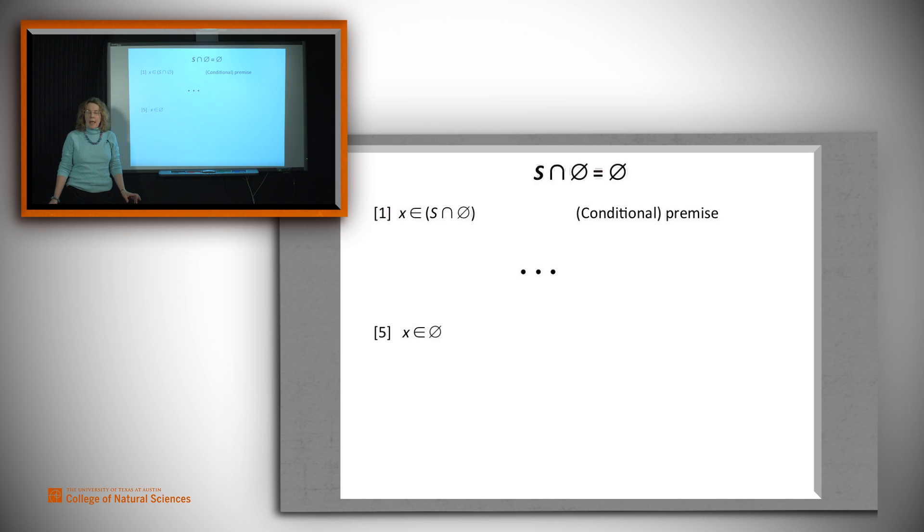Now let's look at how we do this proof where we write out all the steps. What we want to do is we'll take the first piece first. So let's take as a conditional premise that x, some arbitrary x, is an element of S intersect the empty set. Suppose that we could, in a process written here as dot, dot, dot, end up deriving from that, that x must also be in the empty set.